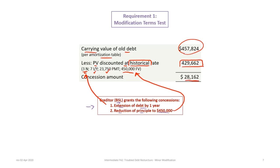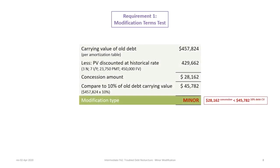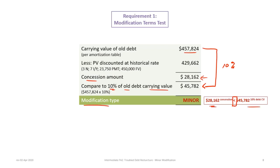The concession amount is $28,162. We compare this against ten percent of the old debt's carrying value: $457,824 times 10% equals $45,782. Because the concession amount of $28,162 is less than 10% of the old debt's carrying value, the modification in our case is minor.